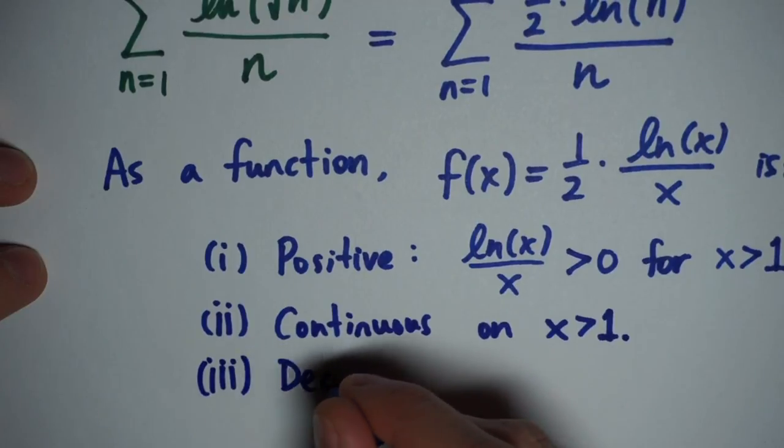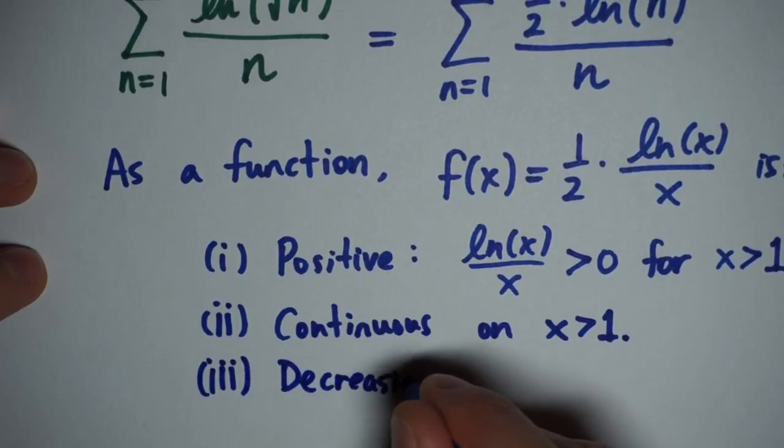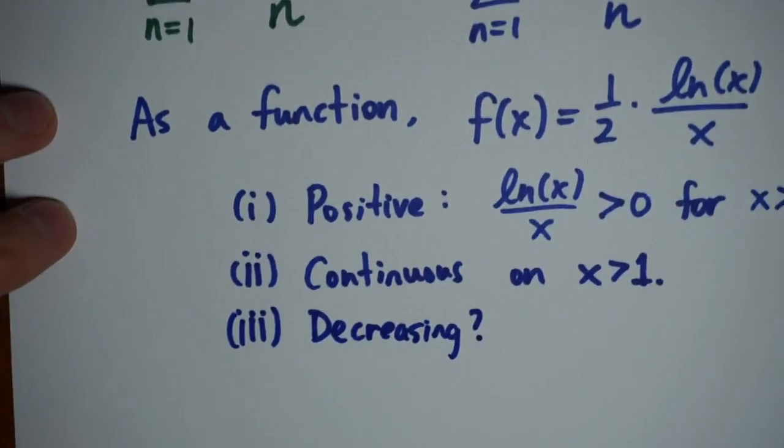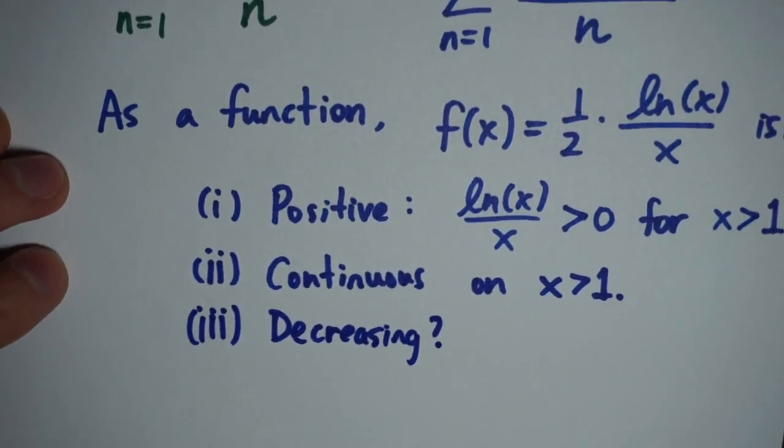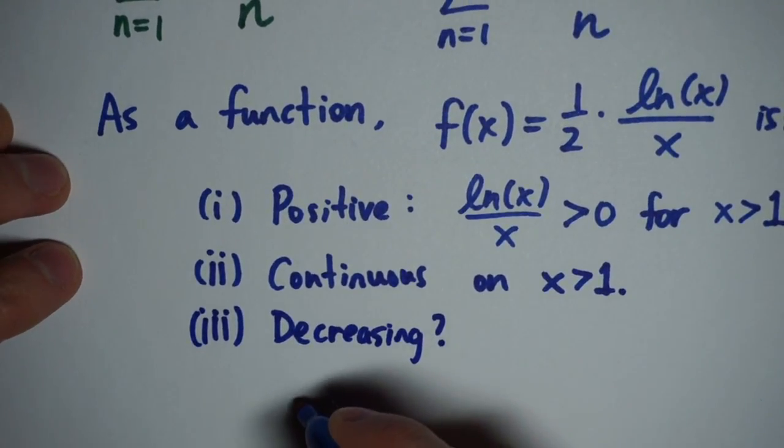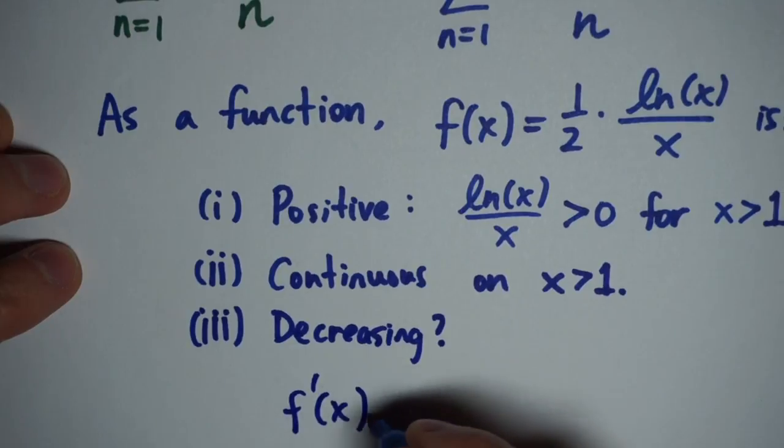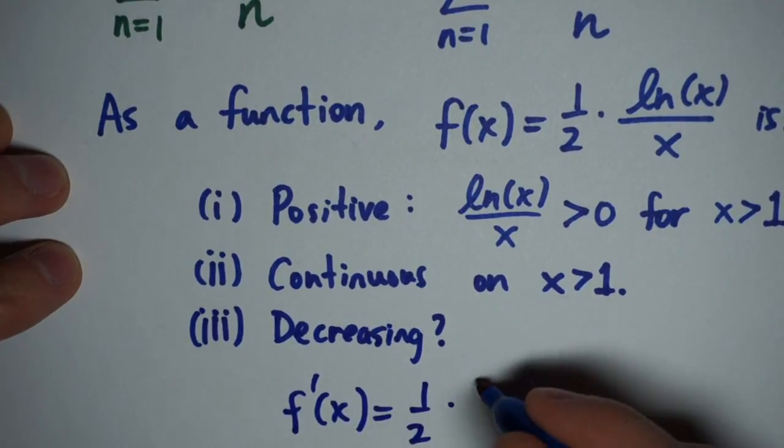The third thing is a little more tricky to check, and we need to make sure that the function is decreasing. And really, we just need that it's decreasing eventually. So in this case, we're going to see if the derivative is negative after a certain point.